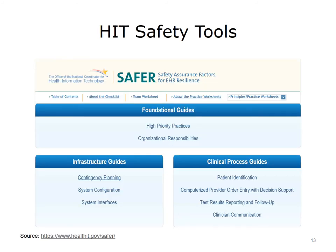The Office of the National Coordinator ONC SAFER Guides consists of nine guides organized into three broad groups, enabling healthcare organizations to address EHR safety in a variety of areas. Most organizations will want to start with the foundational guides, then proceed to address their areas of greatest concern. The guides identify recommended practices to optimize EHR safety and can be explored on their website. Interactive PDF versions can be downloaded, completed locally for self-assessment of an organization's degree of conformance to recommended practices, then saved and transmitted between team members.